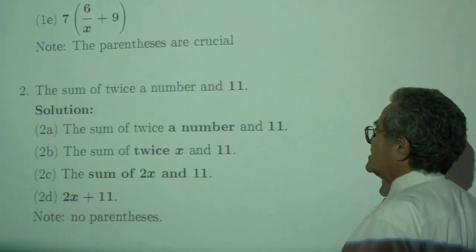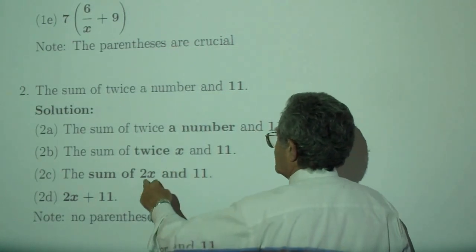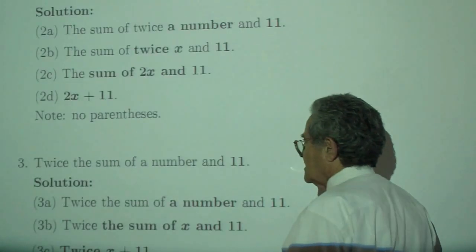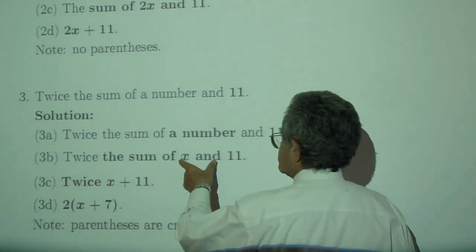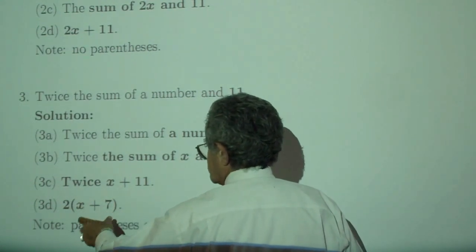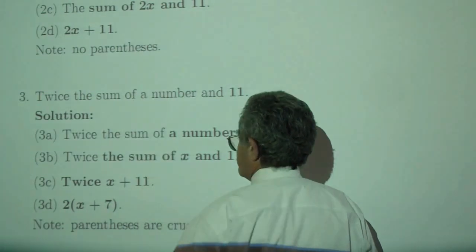In exercise 2, the sum of twice the number - twice the number is 2x and 11, x means addition. And then twice the sum: first we get the sum of x and 11, then we take twice everything that belongs to the sum. The parentheses are crucial here. The parentheses are not over there.